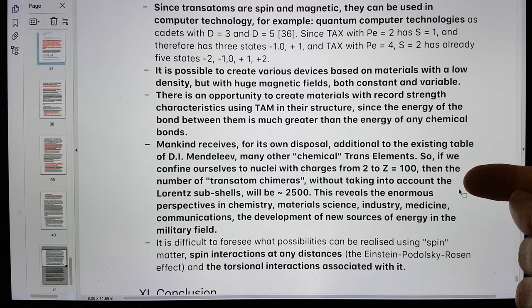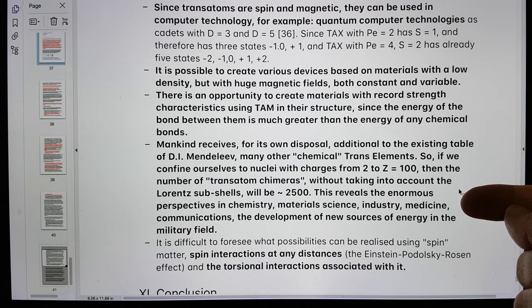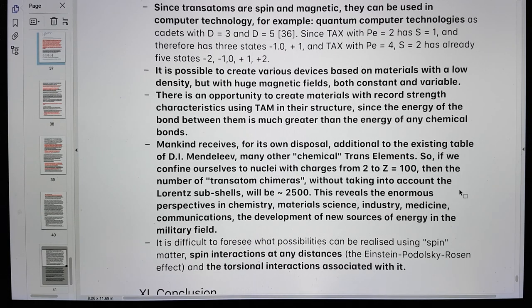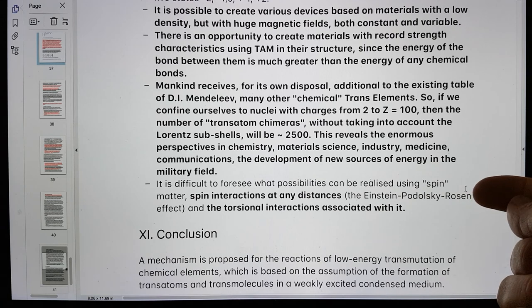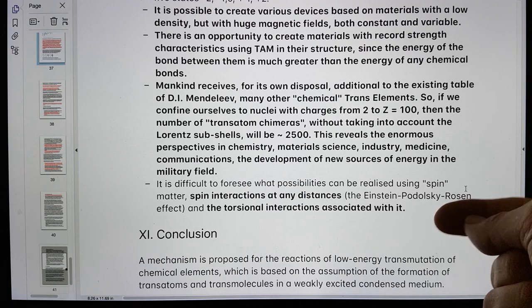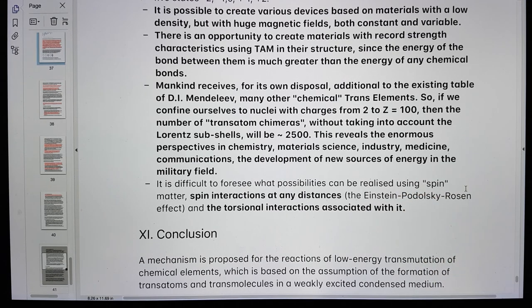If we confine ourselves to nuclei with charges from 2 to Z equals 100, then the number of transatom chimeras, without taking into account the Lorentz subshells, will be 2,500. This reveals the enormous perspectives in chemistry, material science, industry, medicine, communications, and the development of new sources of energy in the military field. It is difficult to foresee what possibilities can be realized using spin matter. Spin interactions at any distances, and the torsional interactions associated with it.